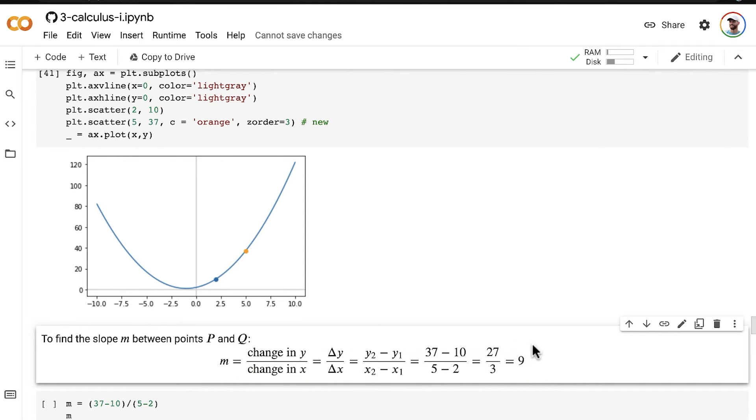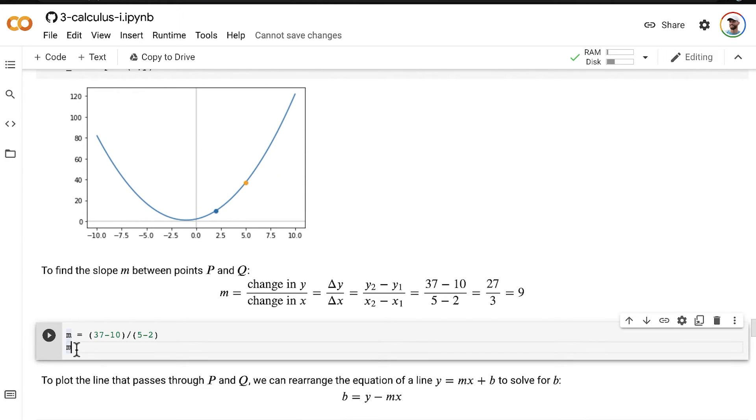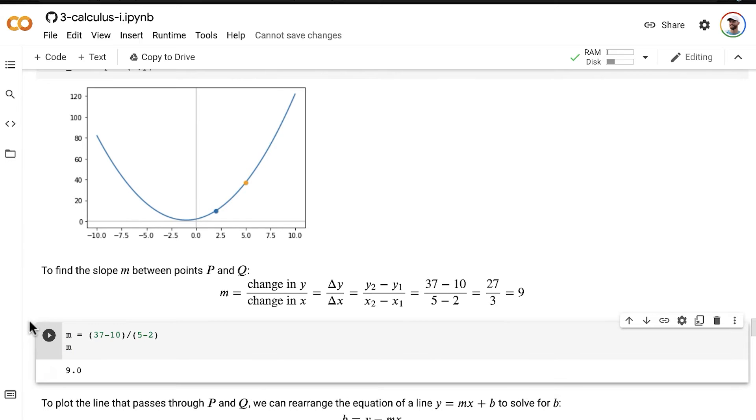We've done it here now. I did this in LaTeX so that you could see it nicely in the notebook, but we could just as easily do it in Python. So 37 minus 9 divided by 5 over 2 gives us our slope of the line between these two points. m is equal to 9.